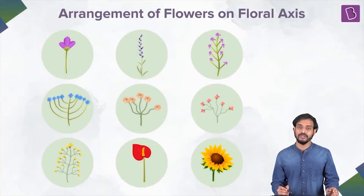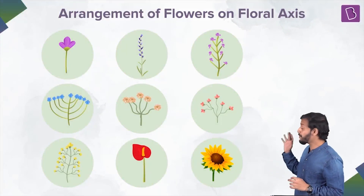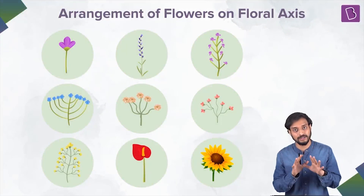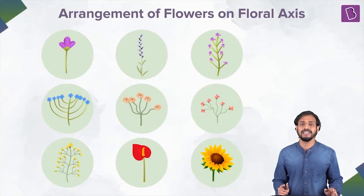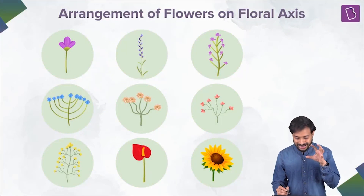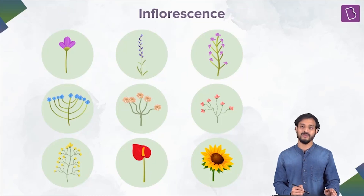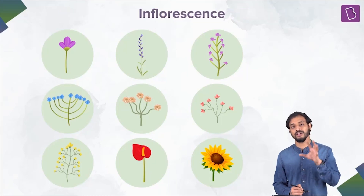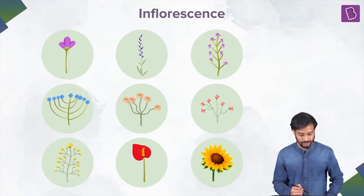The arrangement of flowers on the floral axis can take many different forms. This arrangement of flowers on the floral axis is termed as inflorescence.